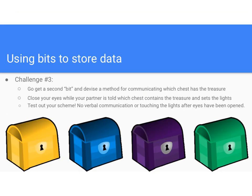We were also going to try four treasure chests using two bits: off/off, off/on, on/off, on/on — those would be the four different states to communicate where the treasure was. Maybe in class we'll try something like it for a future activity. The main idea is: how can we communicate data when all we have are light switches?